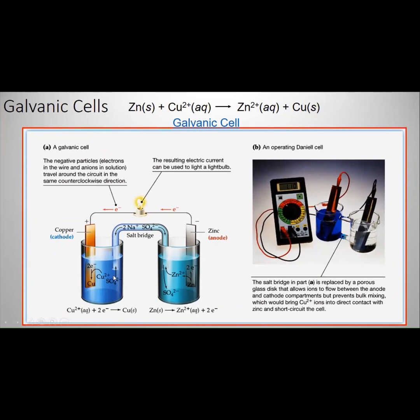So which ions are going to move to which compartment? Let's look at the anode compartment. What is building up at the anode? At the anode, you're producing zinc ion.